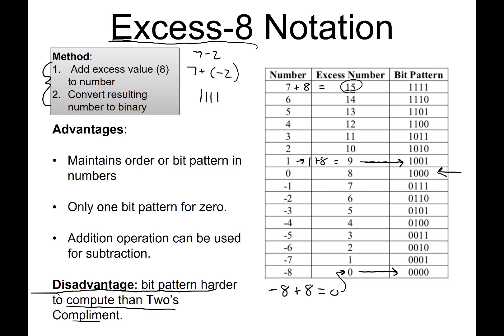Then negative 2 is here. The way we get this binary number is we have negative 2 plus 8, which equals 6. Then we write 6 in binary, which is 0110.